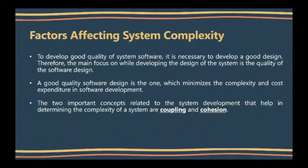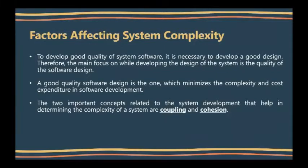Factors affecting system complexity. To develop good quality system software, it is necessary to develop a good design. The main focus while developing the design of the system is the quality of the software design. A good quality software design minimizes the complexity and cost expenditure in software development. The two important concepts related to system development that help in determining complexity are coupling and cohesion.